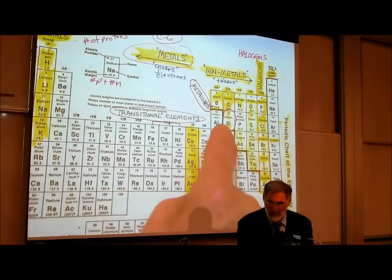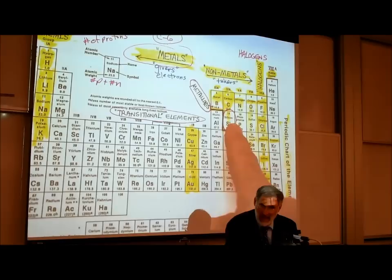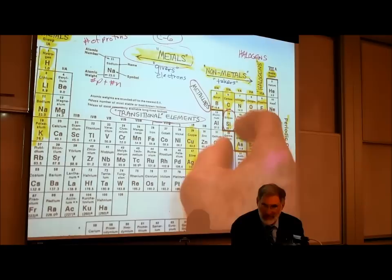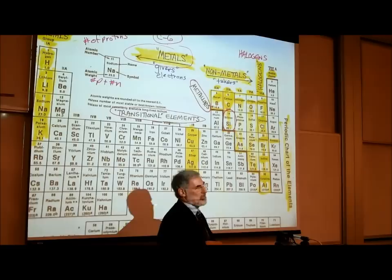These elements right on the boundary line between the metals on the left and the non-metals on the right are sometimes known as the metalloids. The metalloids are atoms that sometimes give and sometimes take, because they're either very reluctant givers or reluctant takers — they're right on the boundary line.